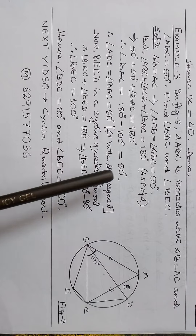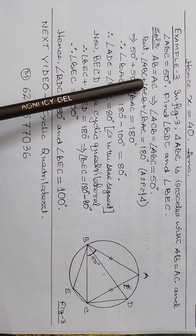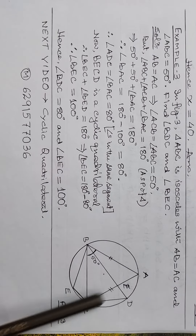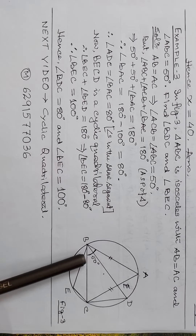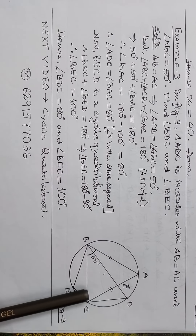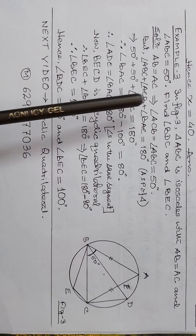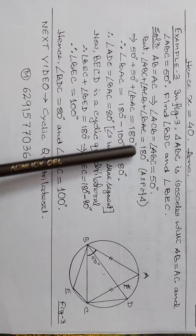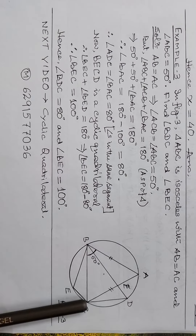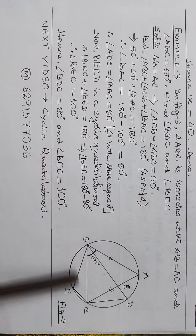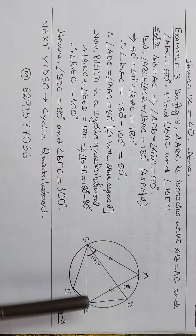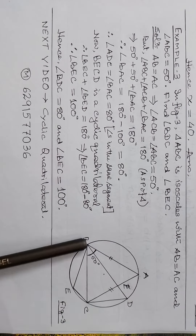Since AB equals AC, the base angles are equal, so angle ACB equals angle ABC equals 50 degrees. Using the angle sum property: angle BAC plus 50 plus 50 equals 180 degrees, giving angle BAC equals 80 degrees.